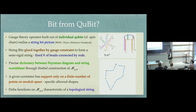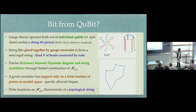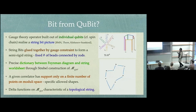Consider gauge theory operators — the kind of single trace operators that we know are dual to closed string states. You can think of them as composite operators built out of individual qubits, and that's the heart of the spin chain picture. The main message I want to convey is that these realize a certain picture of the worldsheet — a string bit picture. Roughly speaking, if I have an operator, there is a definite way to associate with it a string bit picture.